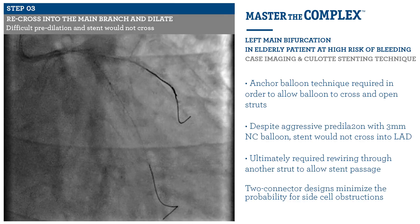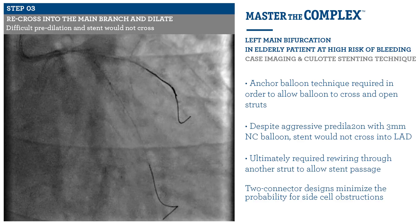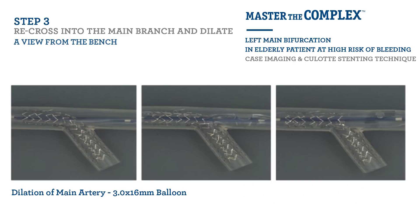We then serially pre-dilated up to a 3 mm non-compliant balloon. Unfortunately, despite this, no stent would cross, and we therefore had to rewire through a different strut from the left main stem into the LAD to allow stent passage. This possibly highlights that there was a connector obstructing the lumen, limiting the passage of a stent into the LAD. Going back to our bench model images, you can see how we use a balloon through the sidewall of the stent in order to create space for stent passage.